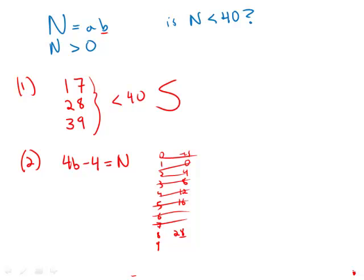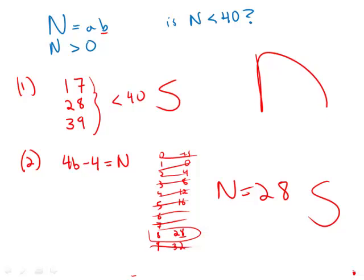Four times nine is 36, minus four is 32, that doesn't work. So the only one that actually works is if the unit digit is eight, and that would mean that N would have to equal 28. And if N is 28, it's definitely less than 40. So this statement is also sufficient. Both statements are sufficient, and the answer is D.